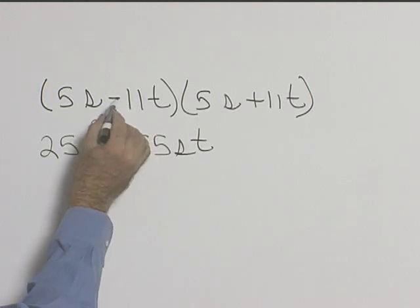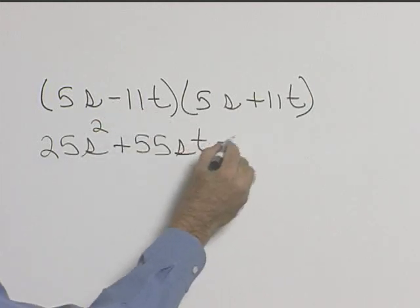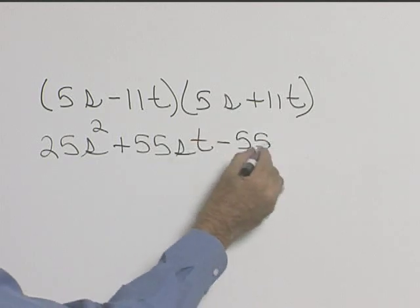Now our inside term we'll have negative 11t times 5s. That will give us negative 55, and again it's st.